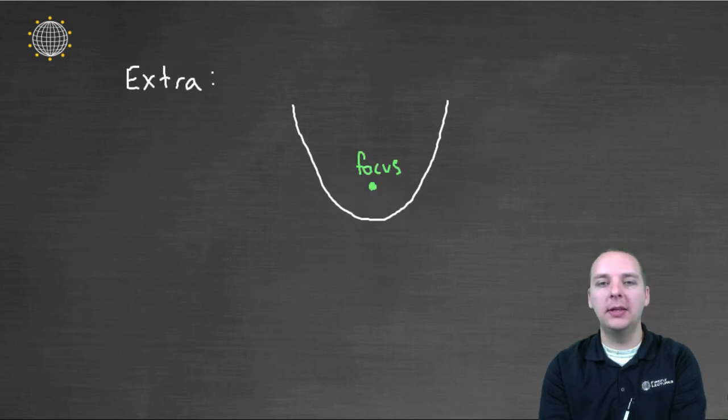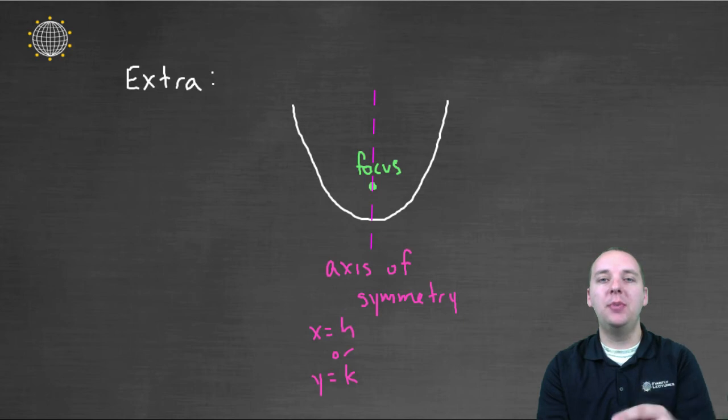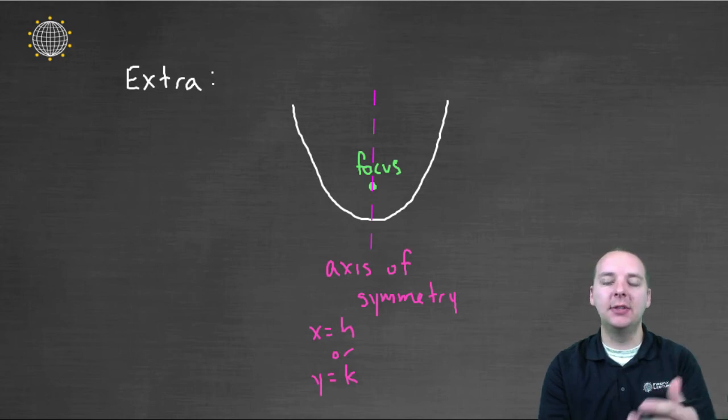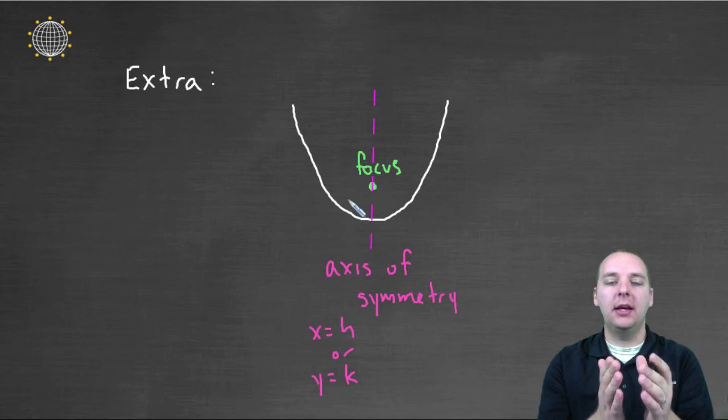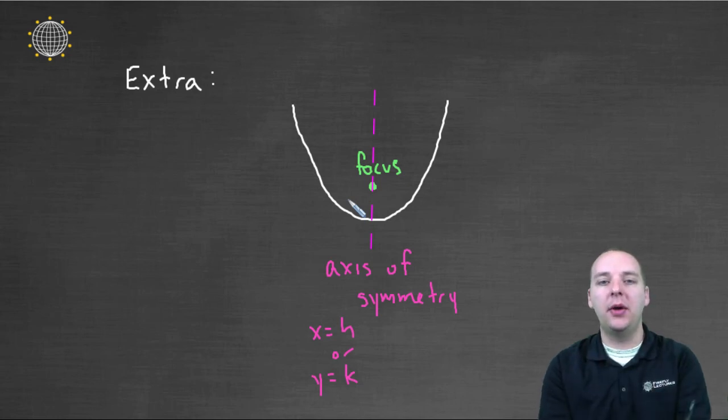Now, the last thing I'll close with is just a few extra remarks. These will be real quick. If you have a parabola, and let's say here's your focus, occasionally you might be asked for the axis of symmetry. The axis of symmetry is just either a vertical line or a horizontal line, depending on how it opens, that is equally matched. The parabola is equally drawn on both sides, is symmetric about that vertical or horizontal line. This one happens to be a vertical axis of symmetry.